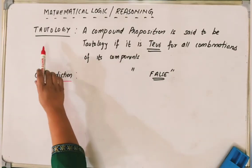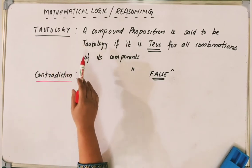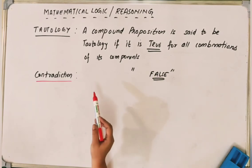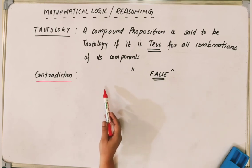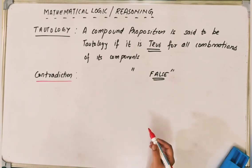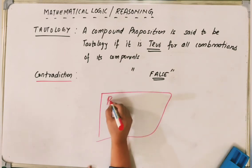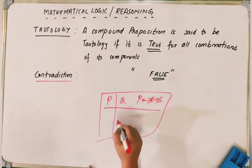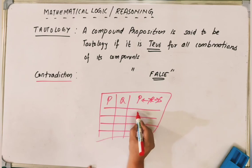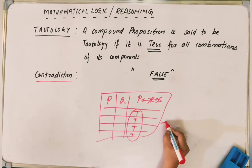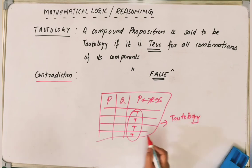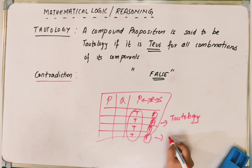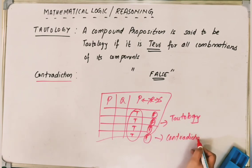There are two key concepts in mathematical logic: tautology and contradiction. If all the combinations in the final column of the truth table give true, it is called a tautology. If all the combinations give false, it is called a contradiction.